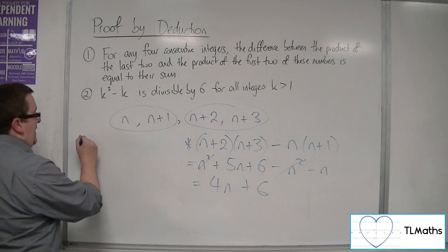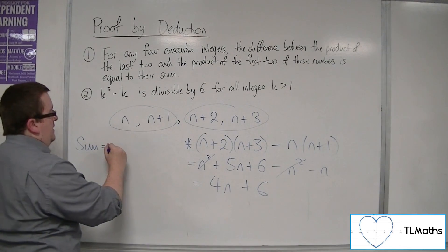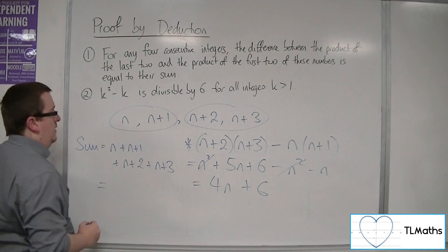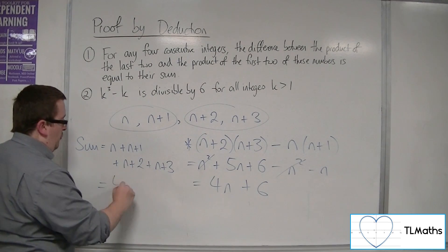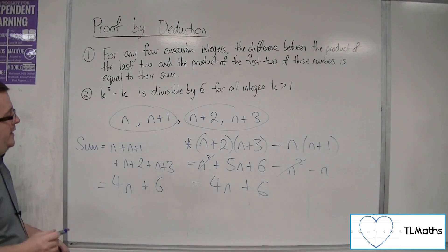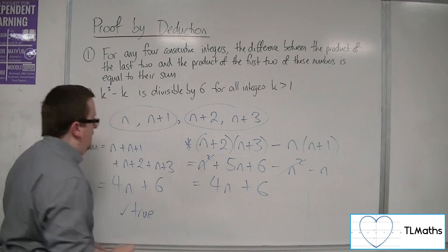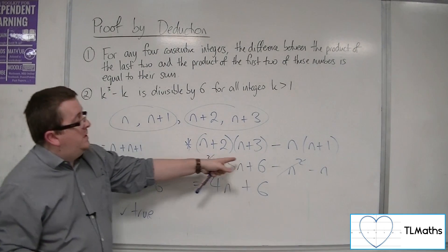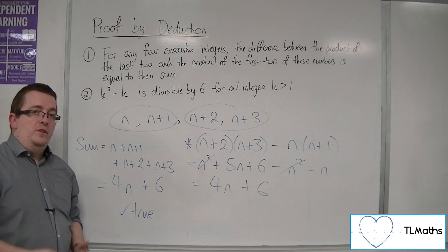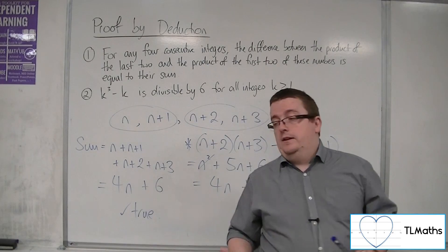So let's see if that's equal to their sum. Now the sum is just adding all four of those together. So n plus n+1, plus n+2, plus n+3. So we've got n, n, n, and n, so 4n's. 1 plus 2 plus 3 is 6. So clearly we have shown that, so this is true. So we've shown that the difference between the product of the last two and the first two is exactly the same as the sum of the four numbers. So we have shown this algebraically in this case.